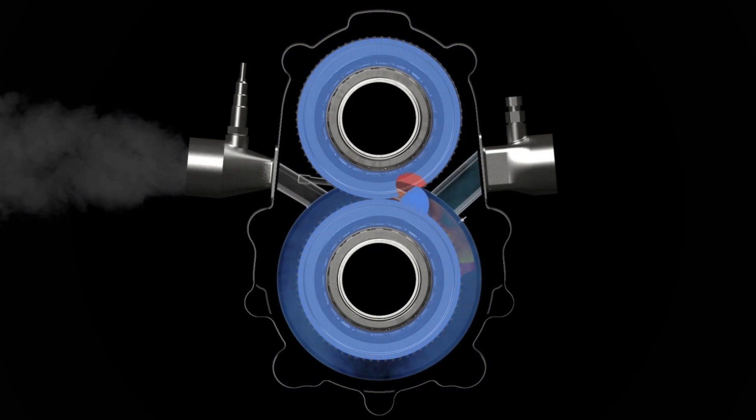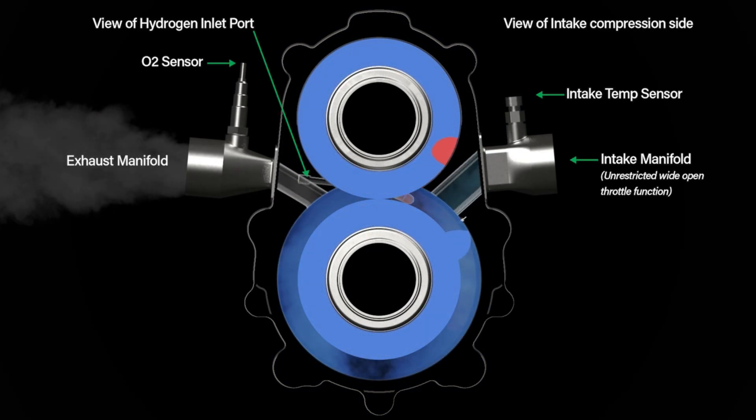Next, we have the view of the hydrogen inlet port, accompanied with the O2 sensor and the exhaust manifold. On the other side is the view of the intake compression side with intake temp sensor and intake manifold, with unrestricted wide-open throttle function.